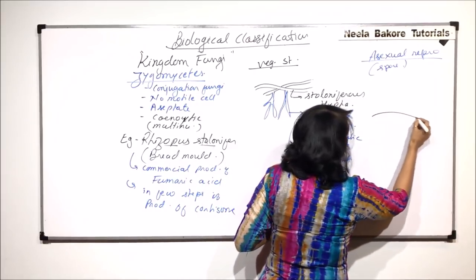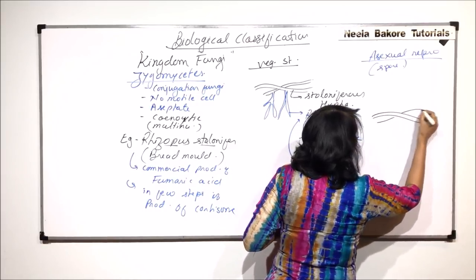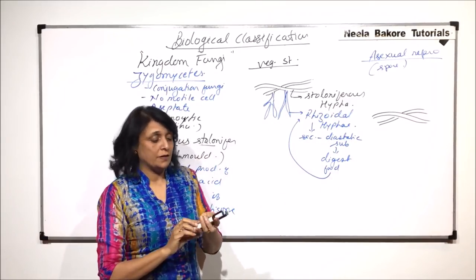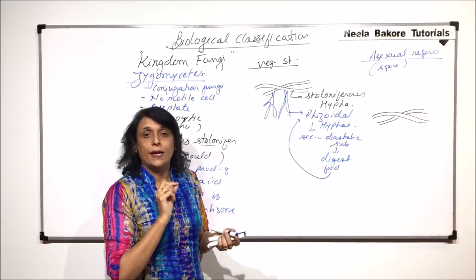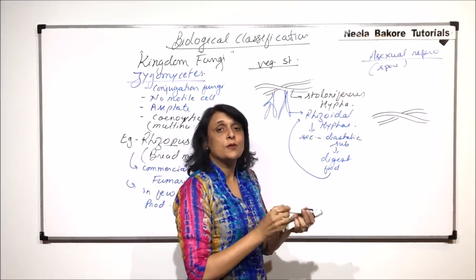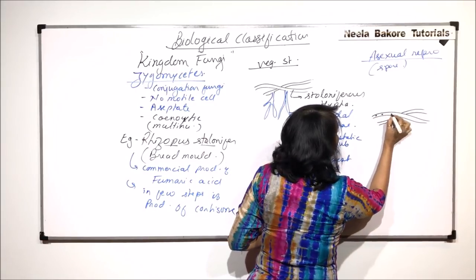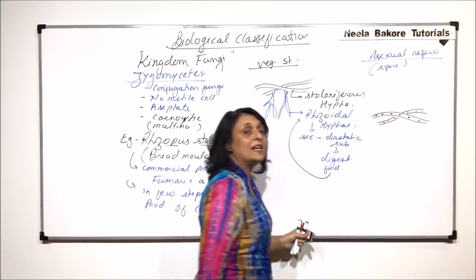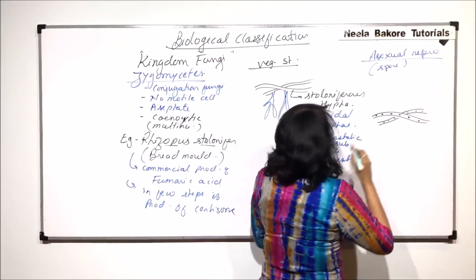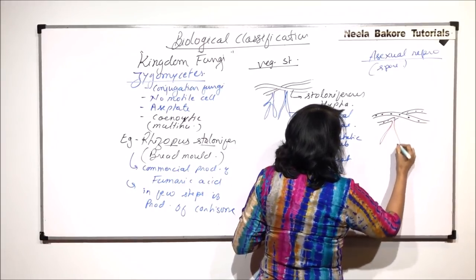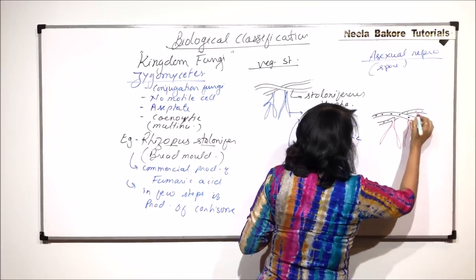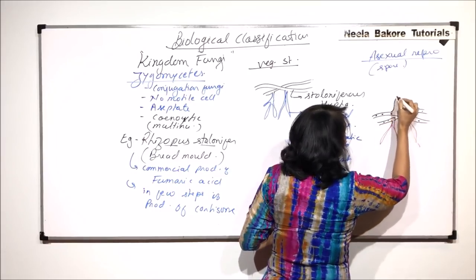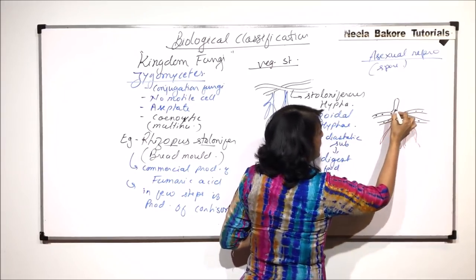Let us draw this stoloniferous hypha. These are the ones which are seen on the substratum. During reproductive season, a vertical growth is seen. We will draw the structure which is inside also. We would find many nuclei, no septa, so it appears as multi-nucleated. There are few rhizoidal ones which are seen here. During reproductive season, there is an outgrowth or a vertical growth which is going to take place.